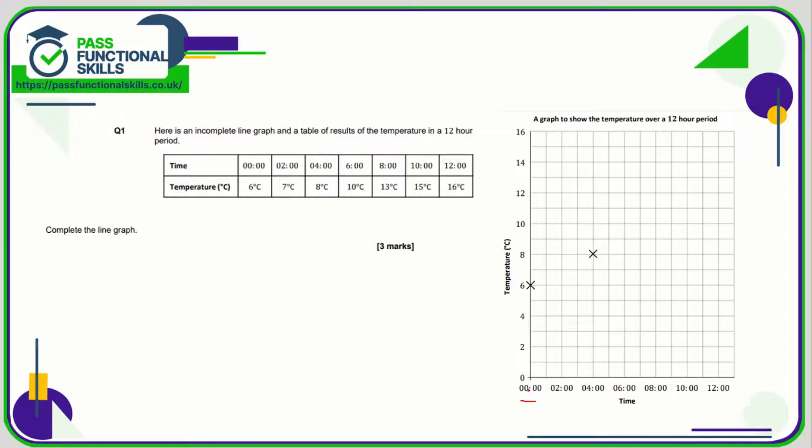2am is 7 degrees, so 2am let's go up to 7 which is between the 6 and the 8, so that is there, done. 6am it's 10, so 6am let's go up to 10, done. 8am is 13, so here's 8am, let's move up until we find 13 which is halfway between 12 and 14.